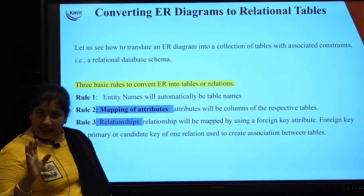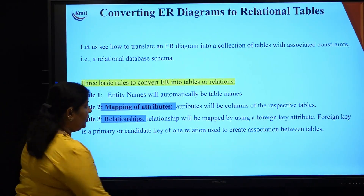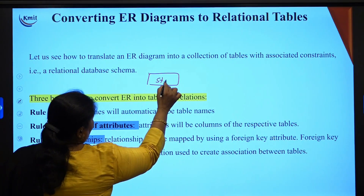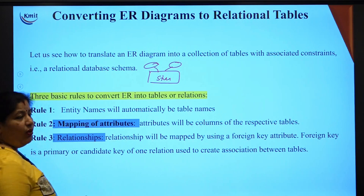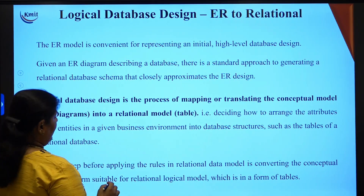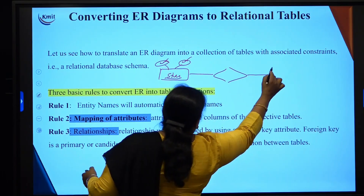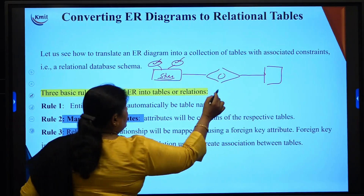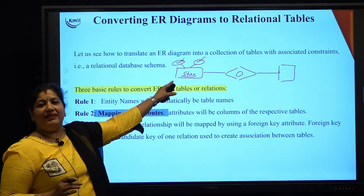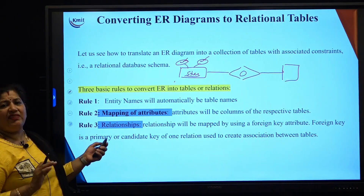The key rules or basic steps are: entity names will automatically become the table names. When we define an ER diagram, we specify an entity with a name — say for example, 'student' — and it will have its attributes. Automatically the entity name becomes the name of the table and each attribute becomes a column. When an entity is associated with another entity, the relationship connecting the two tables is represented using the primary key of one table as the foreign key in another table. Relationships will be mapped using the foreign key as the key attribute.